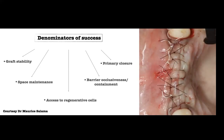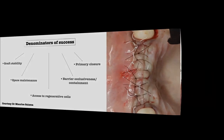Last but not least is primary closure — important for any type of bone graft. It doesn't matter what you put under that flap if you cannot secure it properly. Double-layer closure is what we're always looking for, and this is something we practice religiously at our hands-on courses because it is one of the most important steps of any bone graft procedure.